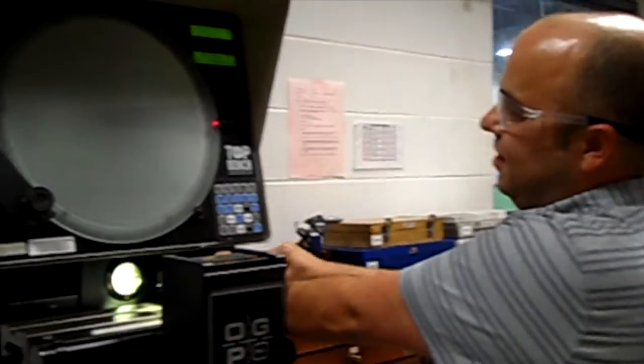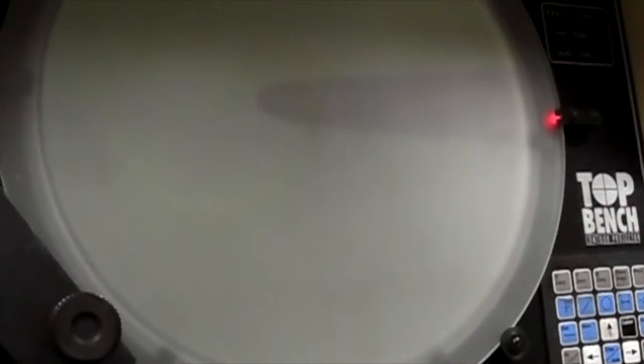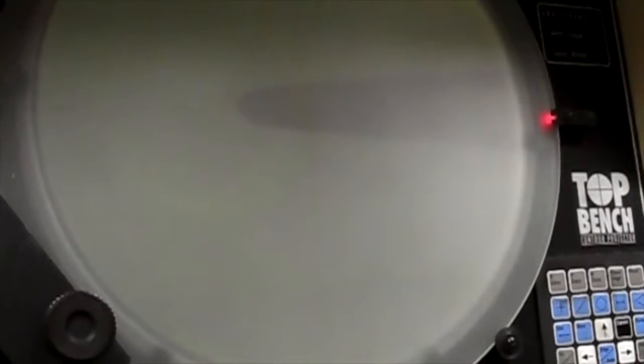As I rotate the needle, you can see that the point is spinning as well. That could be called run out or concentricity and it has to do with the straightness of the needle, but also how true the features are to one another. You can see some irregularities in the point of the needle and that's going to amplify itself when you're knitting with fine yarns.